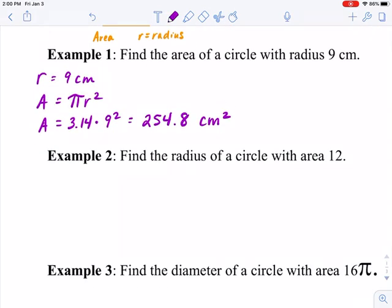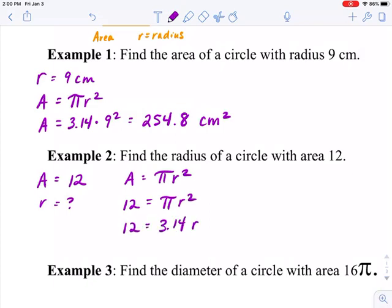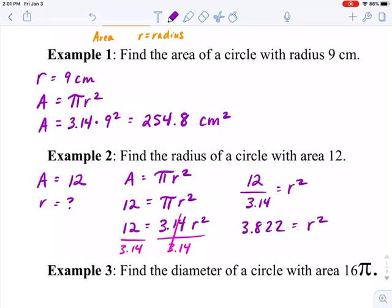Example 2: Find the radius of a circle with area 12. In this case I have an area that's 12 and I'd like to find the radius. So I'll write down my formula and then I'll plug in 12 for area. If it helps, you can plug in 3.14 for pi. And now I'm going to solve for r by dividing both sides by 3.14. And that leaves me with 12 divided by 3.14 equals r squared. Again, I would put that into my calculator and I'll get 3.822 equals r squared. And then to solve for r, I will take the square root of both sides. Remember that square root and squared undo each other, and the square root is 1.96.